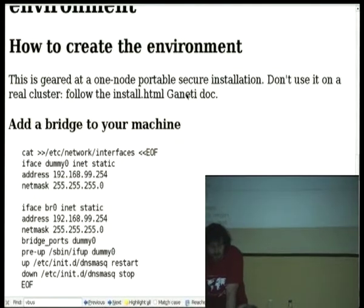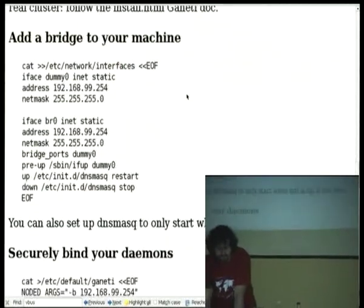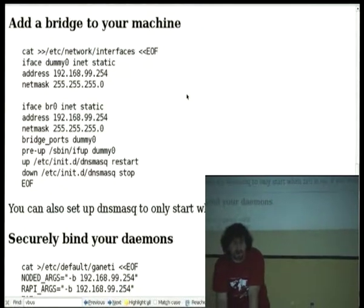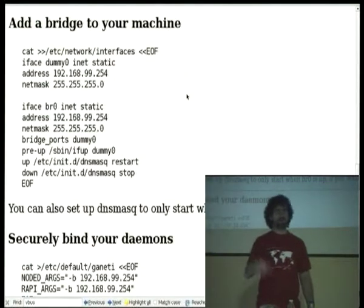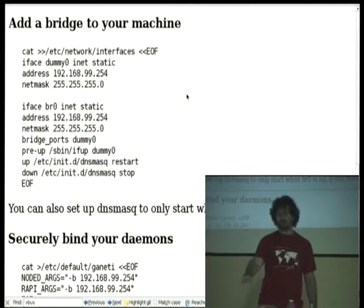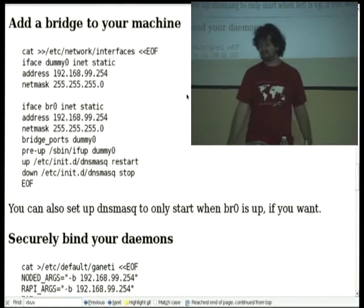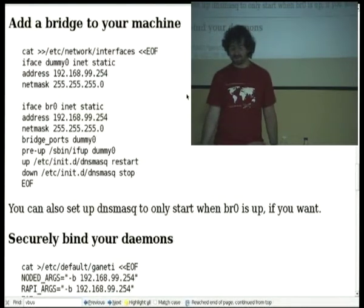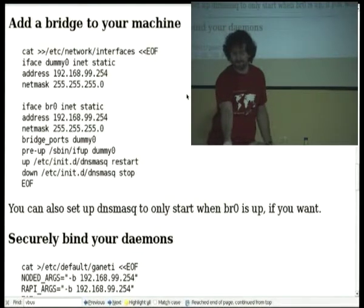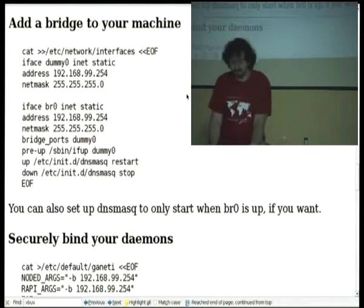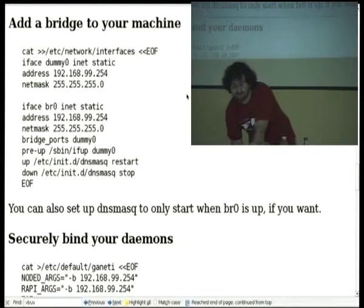First of all, you just add a bridge to your machine. Normally in a cluster you would add a bridge connected to your Ethernet interface. On your laptop you don't really want that — you don't want your instances to be on the network. You may want to NAT them. So what I did is just created a dummy interface. This is to trick the Debian ifup and ifdown scripts to have valid bridge ports. Then just create a bridge interface with the same IP address, so it will inherit it. When I want Ganeti to work, I just do ifup br0.